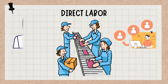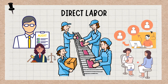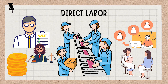Examples of direct labor in service businesses include auditors, lawyers, and consultants. If the work performed cannot be connected to a specific employee, then the wages paid are considered indirect. When tracking the total cost incurred for a specific project, the direct labor cost must be added since it could constitute a significant portion of the project.